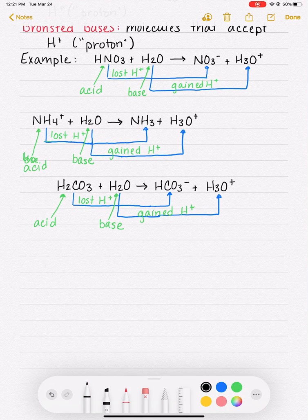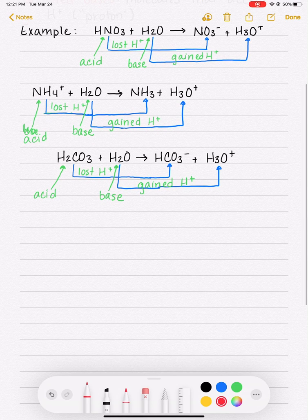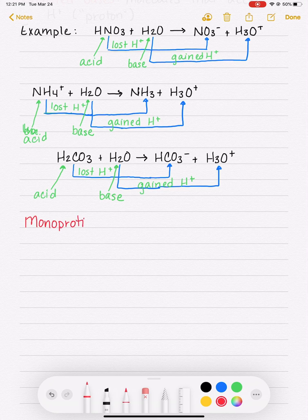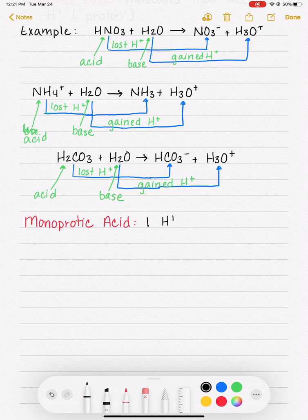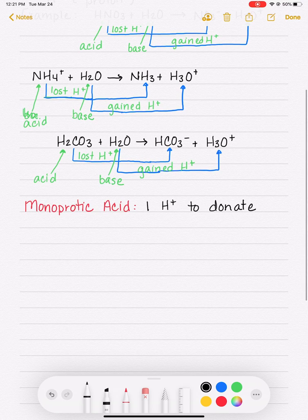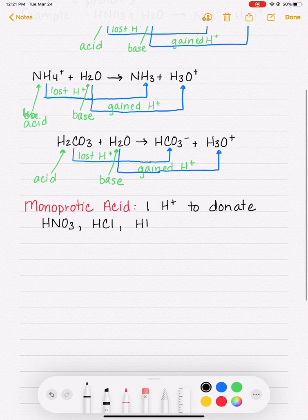Acids can also be classified based on how many hydrogens they have. A monoprotic acid is an acid that has one H+ that it can donate, and we can usually tell an acid is monoprotic just by looking at its formula, like HNO3 only has one hydrogen, HCl only has one hydrogen, HBr only has one hydrogen to donate.